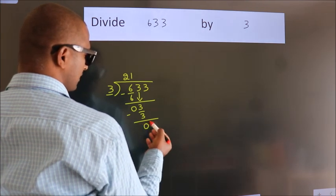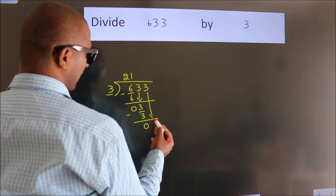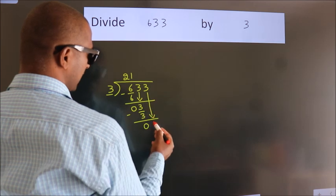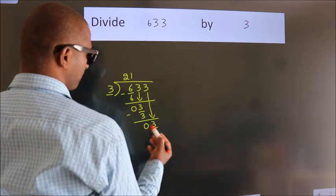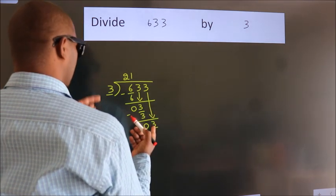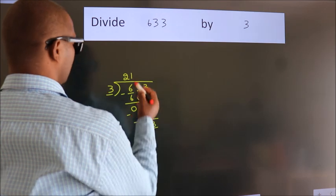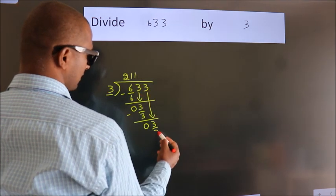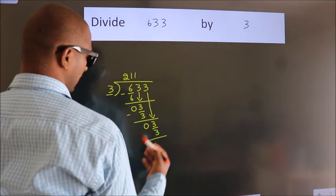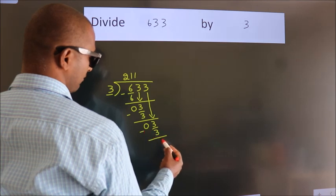After this, bring down the beside number. So 3 down. When do we get 3? In 3 table. 3 times 1 is 3. Now we subtract. We get 0.